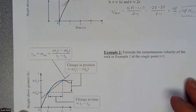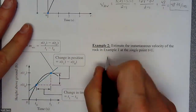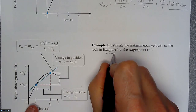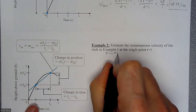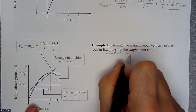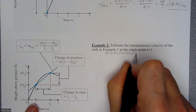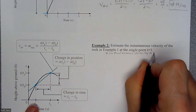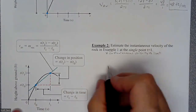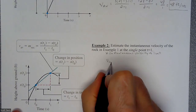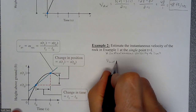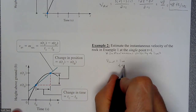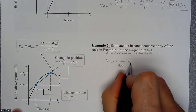To do that, eventually we're going to use some calculus, but right now we are just going to use the calculator and do a little bit of plug and chug. Our instantaneous velocity is a limit — specifically, it's the limit as t approaches 1 of our average velocity.